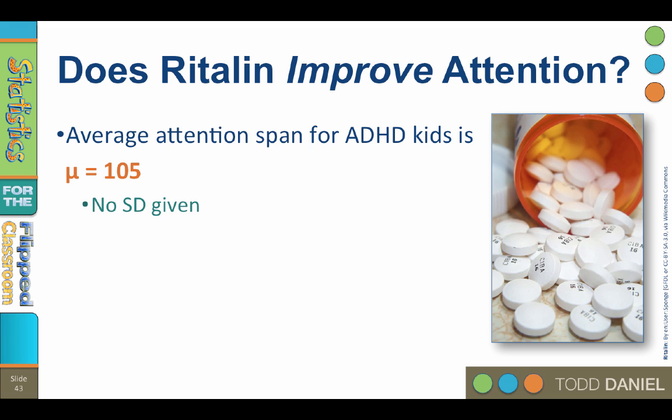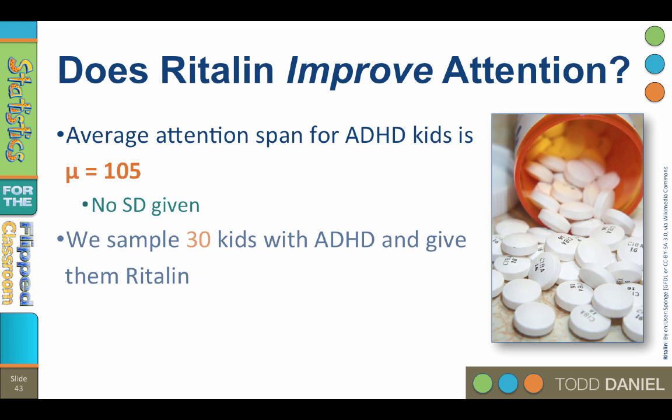The population value is 105, and we do not have a standard deviation for the population, as is usually the case. Now you randomly select a sample of 30 ADHD kids whom you would expect would have an attention span of 105, but you give them Ritalin and then measure their attention span. Is the attention span of ADHD kids given Ritalin significantly longer than 105?